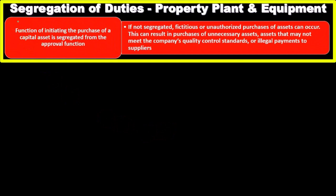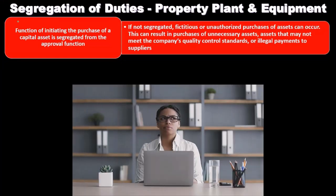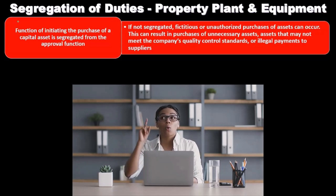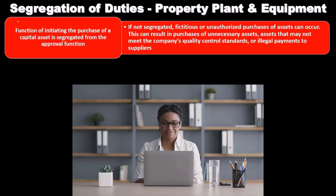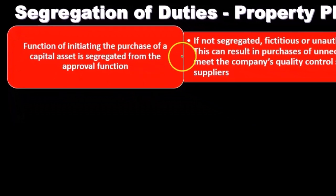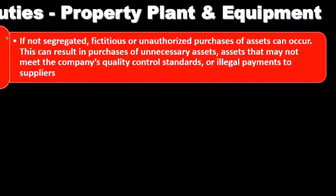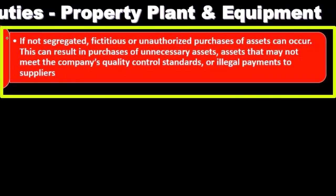Segregation of duties is a key internal control for property, plant, and equipment. Larger companies can achieve more separation of duties than smaller ones given their greater staffing. One critical segregation is between the function of initiating the purchase of a capital asset and the approval function. Without this separation, fictitious or unauthorized purchases of assets can occur.